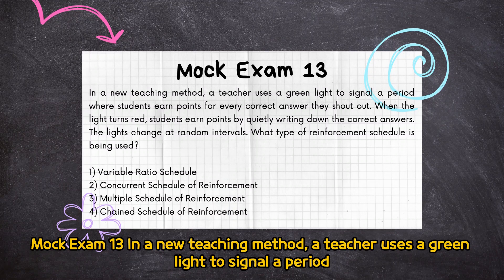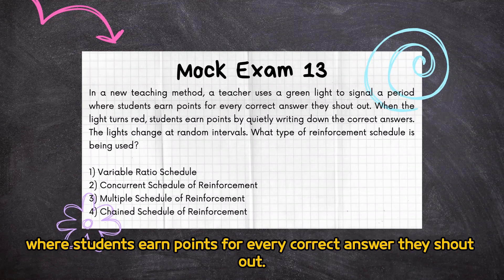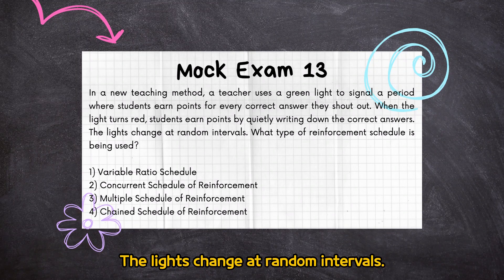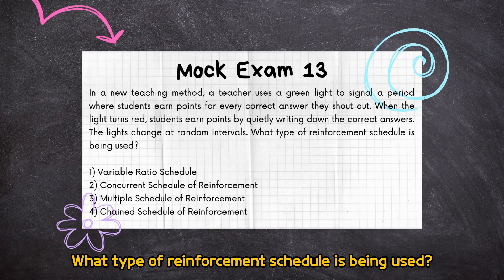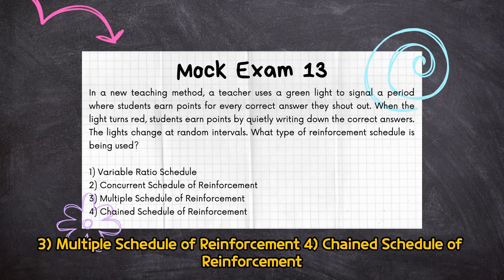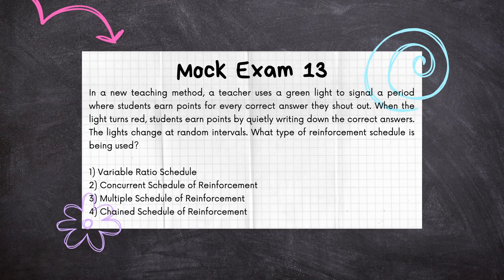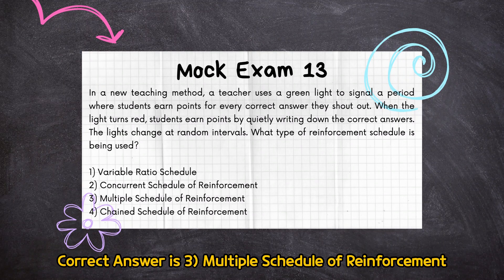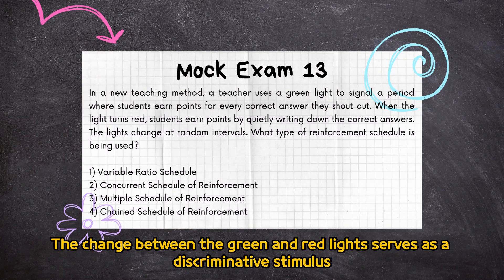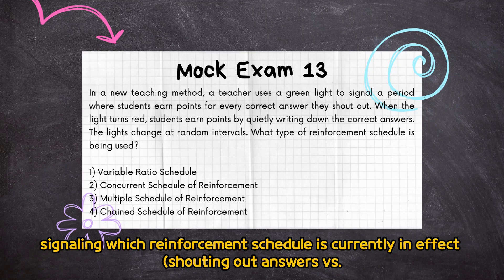Mock Exam 13: in a new teaching method, a teacher uses a green light to signal a period where students earn points for every correct answer they shout out. When the light turns red, students earn points by quietly writing down the correct answers. The lights change at random intervals. What type of reinforcement schedule is being used? (1) Variable ratio schedule, (2) Concurrent schedule of reinforcement, (3) Multiple schedule of reinforcement, (4) Chain schedule of reinforcement. Correct answer is 3: multiple schedule of reinforcement. This teaching method demonstrates multiple schedules of reinforcement. The change between the green and red lights serves as a discriminative stimulus, signaling which reinforcement schedule is currently in effect — shouting out answers versus writing them down.